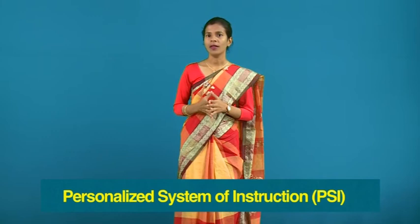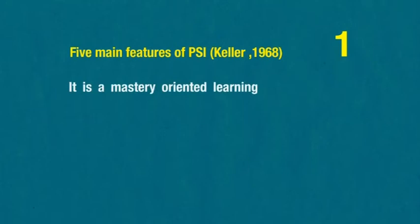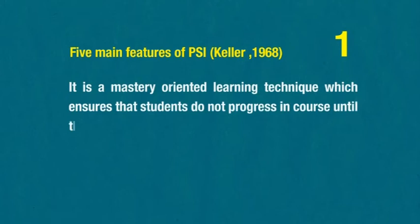The second technique is personalized system of instruction, referred to as PSI. It emphasizes learner-centered instruction and is named the Keller Plan after Professor Fred S. Keller, who developed it with associates in the 1960s. In this technique, the individual receiving instruction is a key figure and the whole instruction is planned keeping learners in mind. Keller identified five main features of PSI. The first is that it is a mastery-oriented learning technique, ensuring students don't progress in a course until clear understanding of each unit is demonstrated through quiz forms.